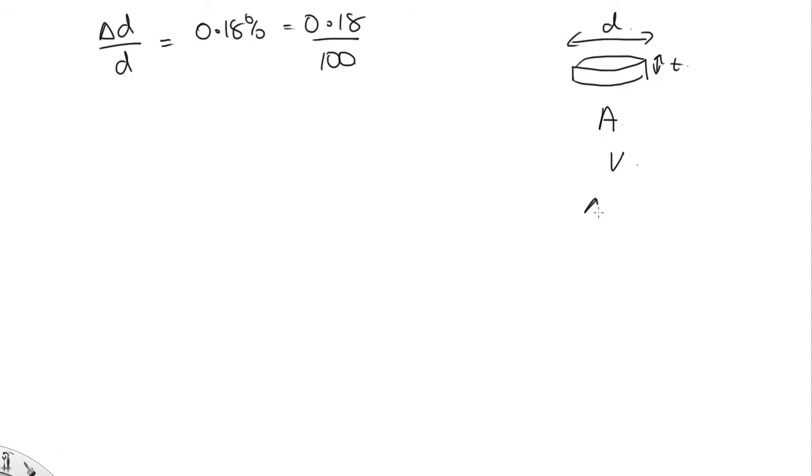Now, we know that the change in the diameter is equal to the diameter times alpha delta t. And so we can write that delta d over d is equal to alpha delta t.